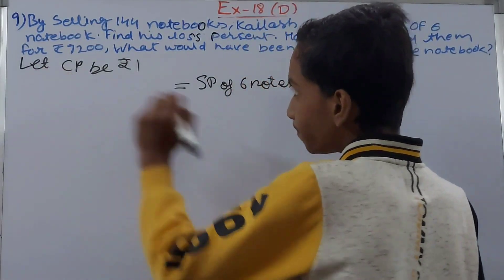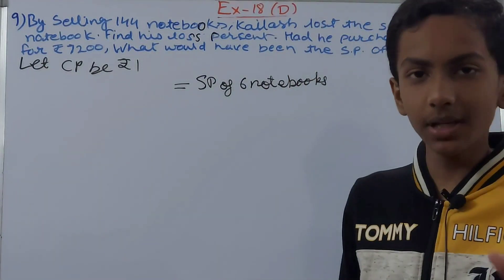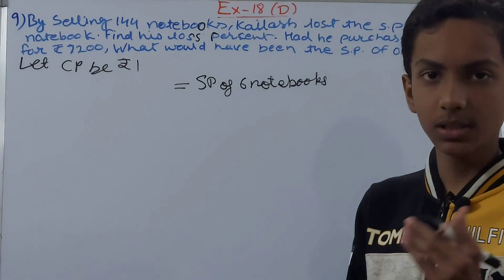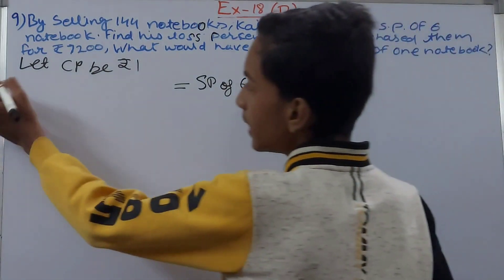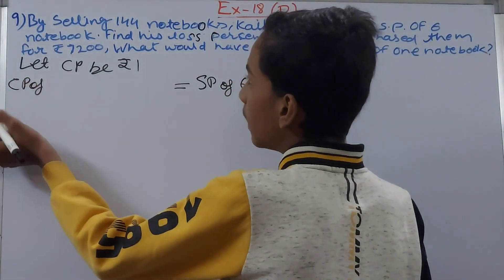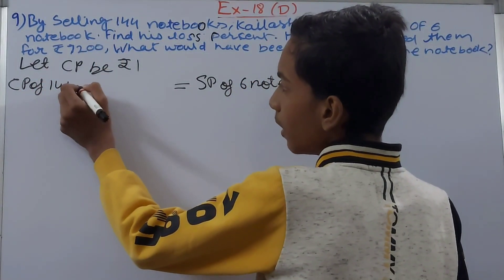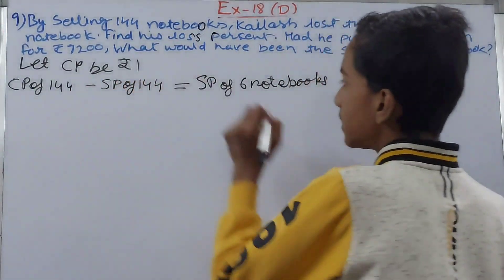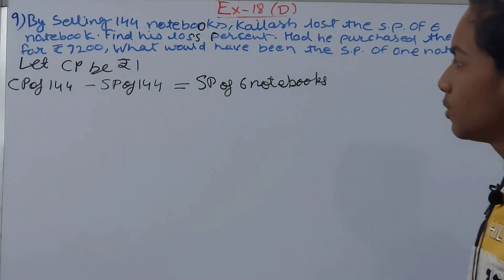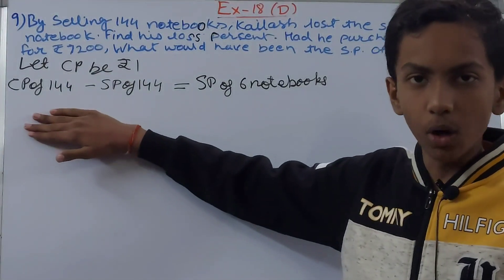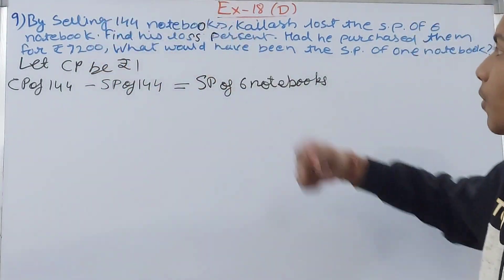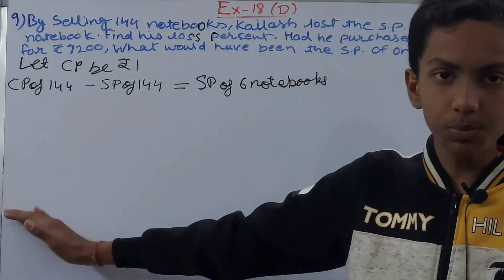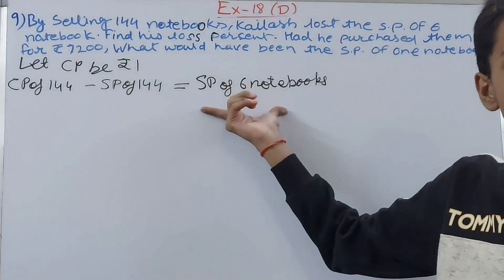He is suffering a loss by selling 144 notebooks. Remember that loss equals cost price minus selling price. So: CP of 144 notebooks minus SP of 144 notebooks equals SP of 6 notebooks. This means if we subtract the SP of 144 notebooks from the CP of 144 notebooks, the loss equals the SP of 6 notebooks.